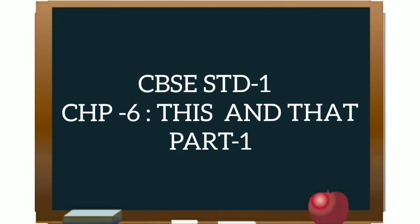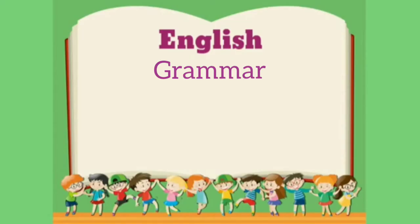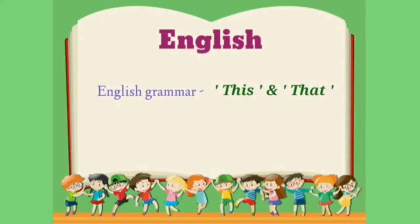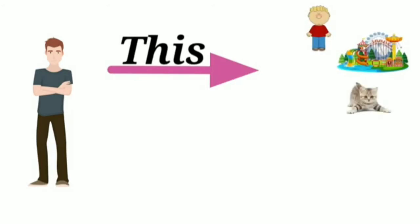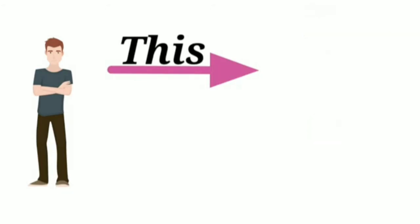We will start our new lesson — Chapter 6: This and That. We will see some examples of this and that. 'This' refers to a person, animal, or thing which is near — near means which is close to us or around us.